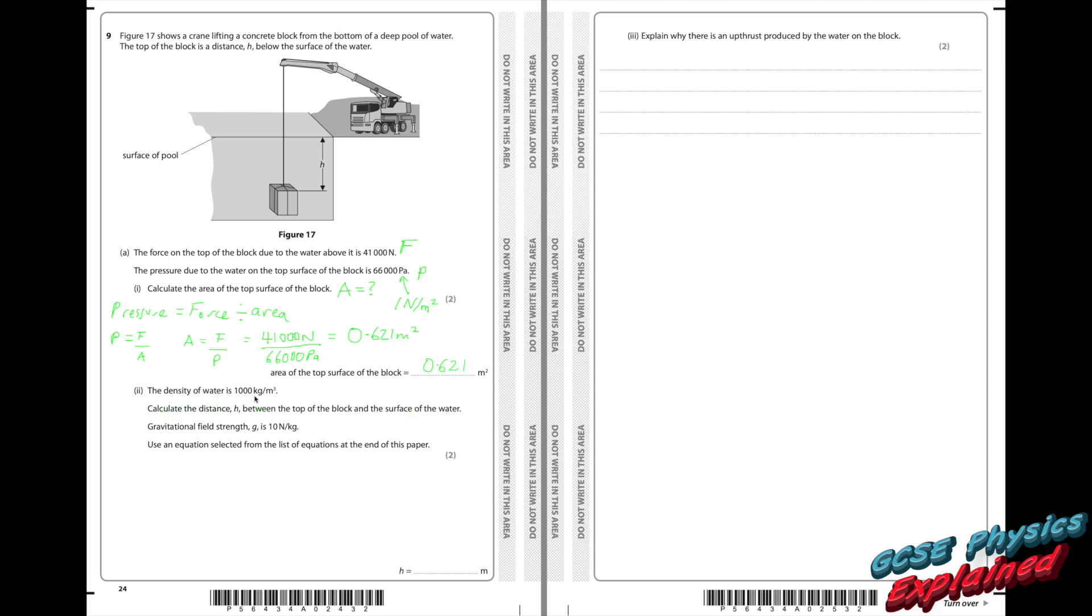The density of water is a thousand kilograms per metre cubed. So density is represented by a wiggly p called rho. Calculate the distance h between the top of the block and the surface of the water. Gravitational field strength g is 10 newtons per kilogram.